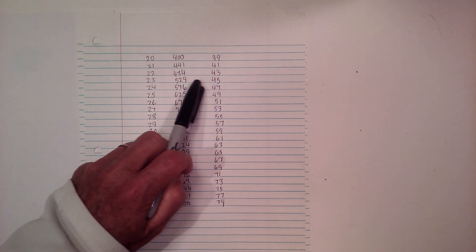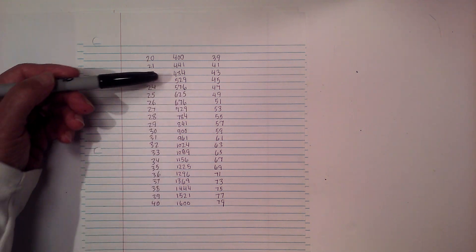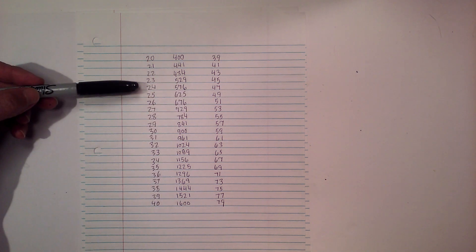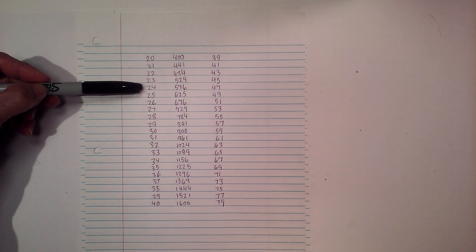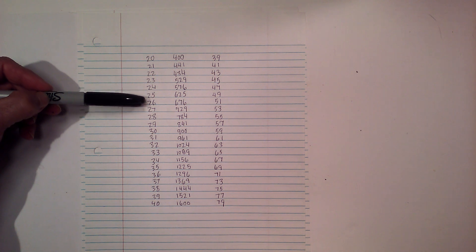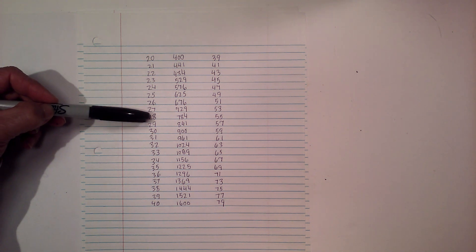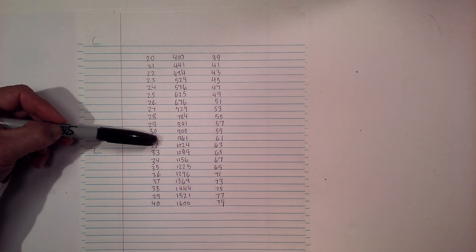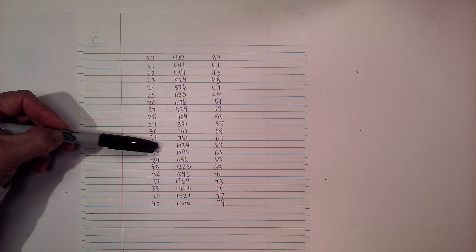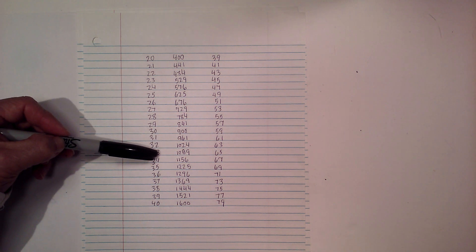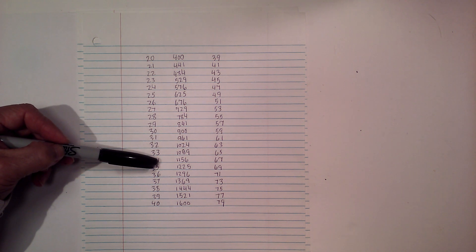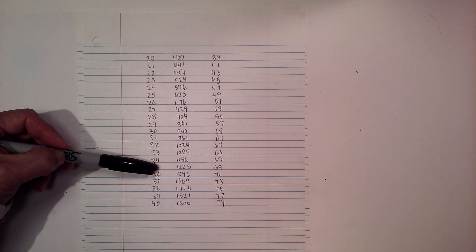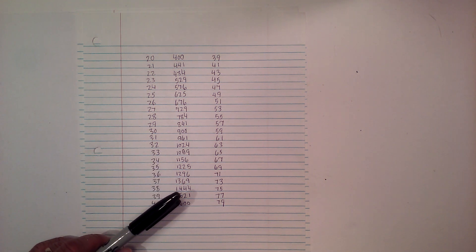For the square of 23, 484 plus 45 is 529. Continuing: 576, 625, 676, 729, 784, 841, 900, 961, 1024, 1089, 1156, 1225, and so on down to 40.